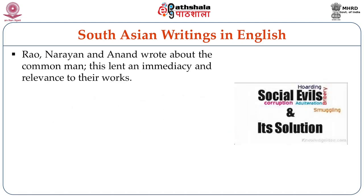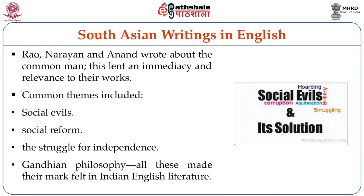Rao, Narayan, and Anand all wrote about the common man, and this lent an immediacy and a relevance to their writings. Common themes in this period included social evils, the need for social reform, the caste system, the struggle for independence, and the influence of Gandhi and his philosophy — all of these made their mark felt in the realm of Indian English literature.